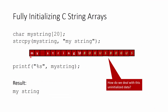Let's talk about fully initializing C arrays. We set up a 20-character array and copy in "my string" using strcpy. The result has "my string" followed by a null terminator, but we don't know what's in the rest of the array. Some compilers will put null terminators there, others won't — they'll just leave that memory alone, because skipping the initialization is faster. When we print it out, printf knows to print only up to the null terminator, so the rest isn't displayed — but it's still there.